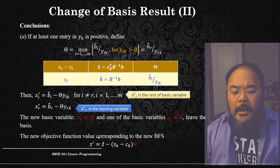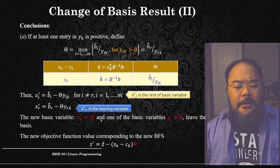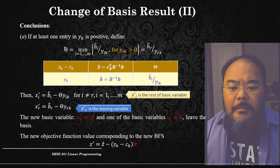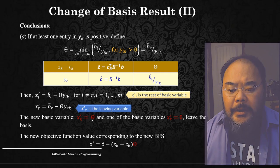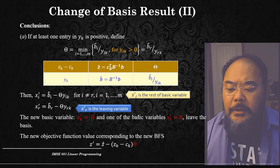The new objective function value z-prime equals the current objective function value z-hat minus (z_k minus c_k) times the minimum ratio. The minimum ratio is the new value for the entering basic variable, and the objective function change equals the current value minus the reduced cost z_k minus c_k times the minimum ratio.